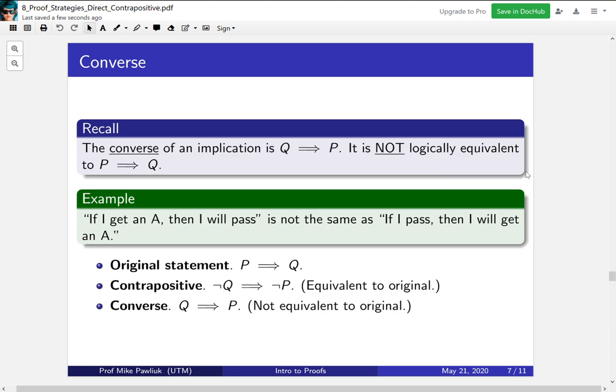To show you visually, the original statement is P implies Q, the contrapositive is not Q implies not P, which is equivalent to the original, and the converse is Q implies P, you're just reversing the arrow. This is not equivalent.